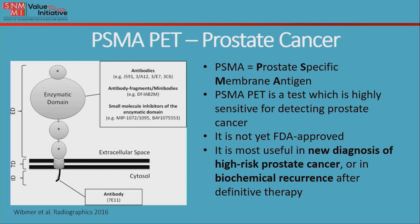This test is mostly used in two settings. The first is in patients with a new diagnosis of high-risk prostate cancer. The second is biochemical recurrence after definitive therapy — what happens when patients have had surgery or radiation and then their PSA, or prostate-specific antigen, starts to rise again. That means the cancer is probably back, but we don't yet know where, so we don't yet know what the best treatment is. It is the job of the PSMA PET scan to detect these sites of disease recurrence.